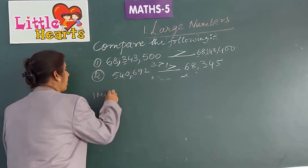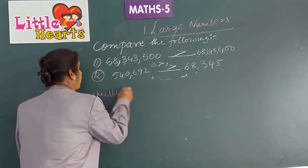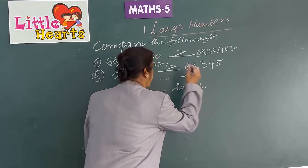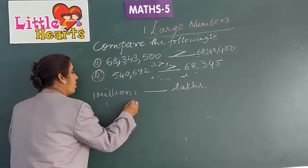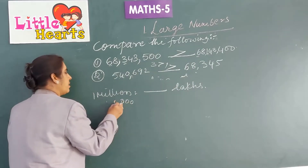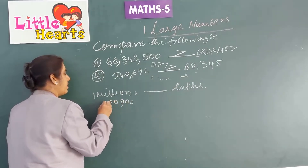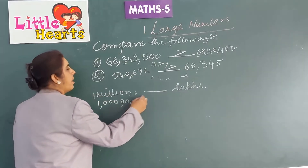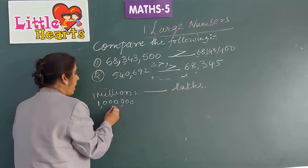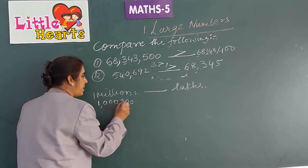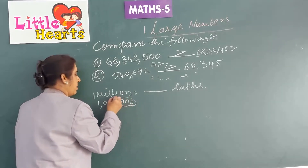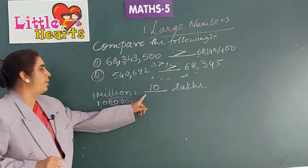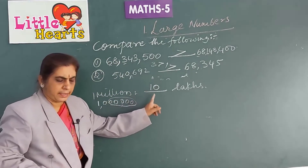1 million is equal to how many lakhs? This is 1 million. Lakhs means we should cut 5 zeros. This is 10 lakhs. So, 1 million is equal to 10 lakhs.